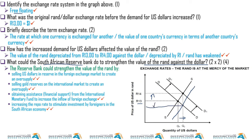If they sell USD, the rand will appreciate — maybe to 1 is to 10. If supply shifts to S1, we have a new equilibrium at that point. They can also sell gold reserves on the international market to create an oversupply, so the rand will appreciate against gold. Another option is obtaining assistance from the International Monetary Fund to increase the inflow of foreign exchange.